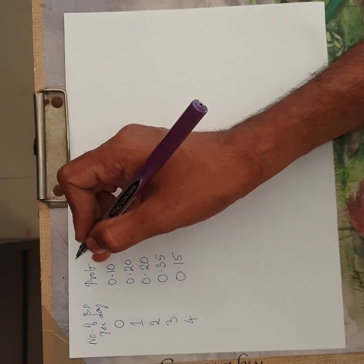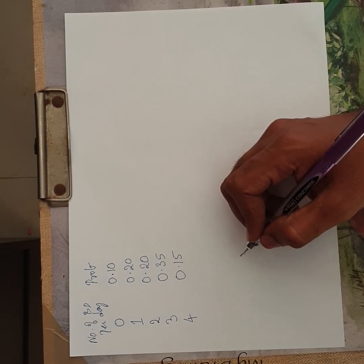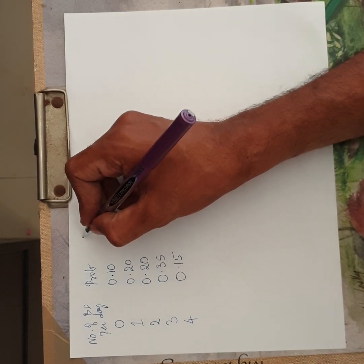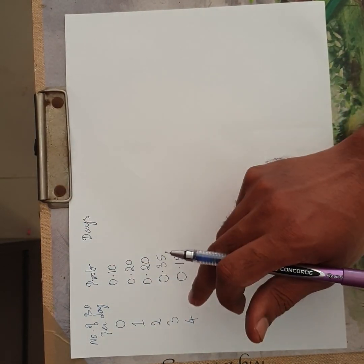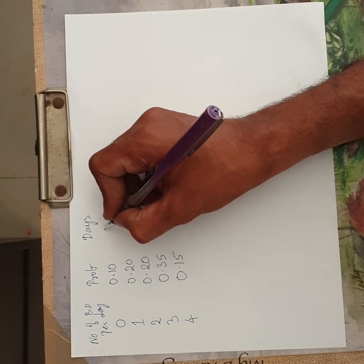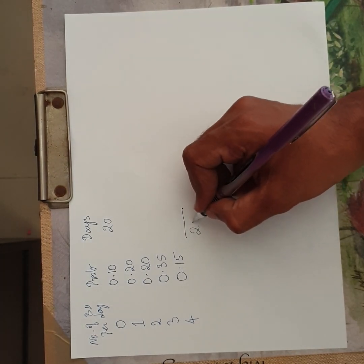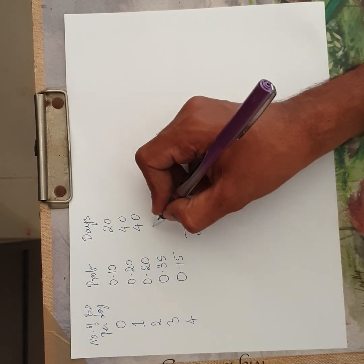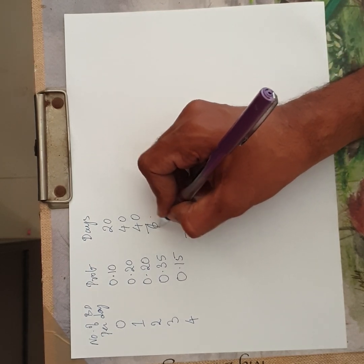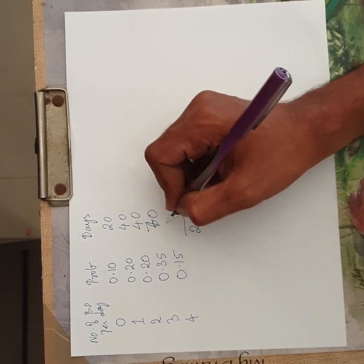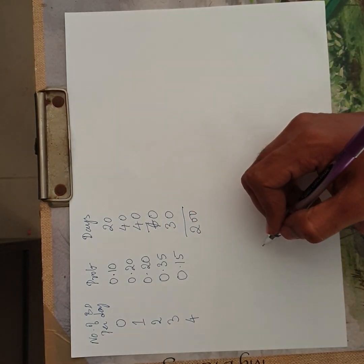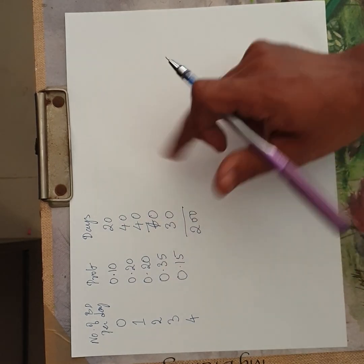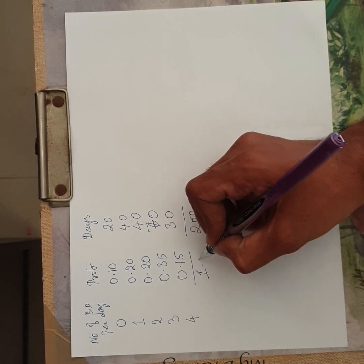The question may give you numbers as probabilities, or as actual number of days. For example, over 200 days: 20 days with zero breakdowns, 40 days with one breakdown, 40 days with two breakdowns, 70 days with three breakdowns, and 30 days with four breakdowns — totalling 200 days. If you apply percentages, 20 divided by 200 gives 10%, and so on. Your probabilities will always add up to 1.00.